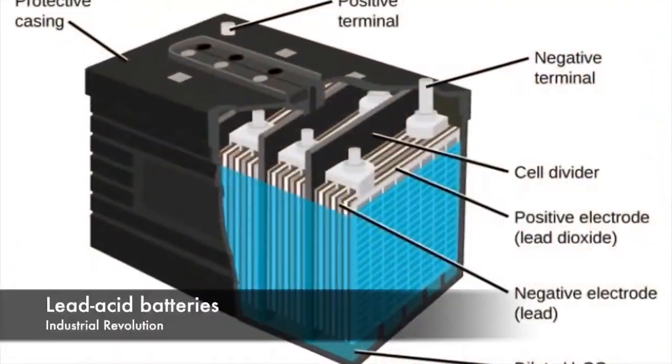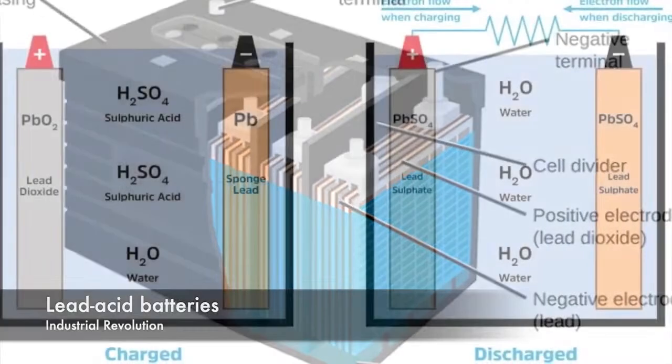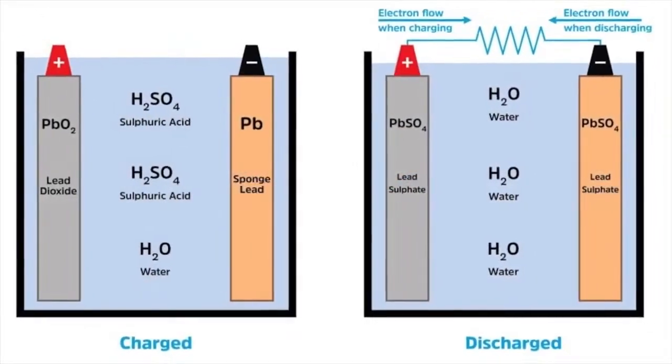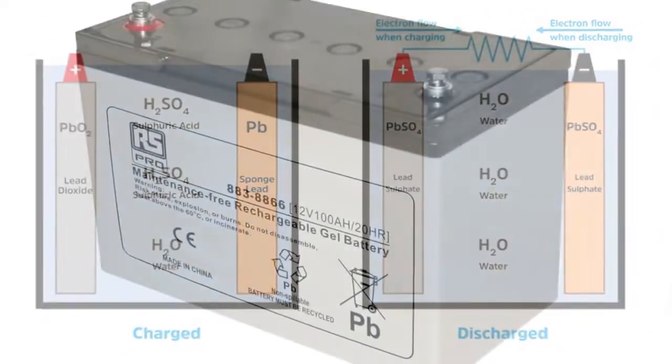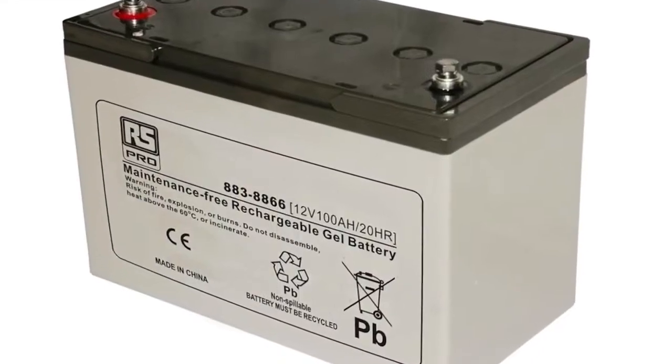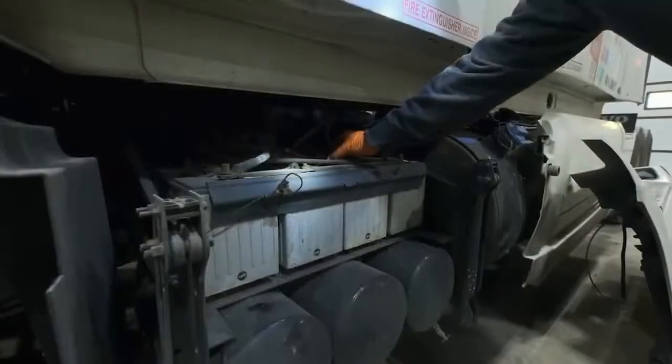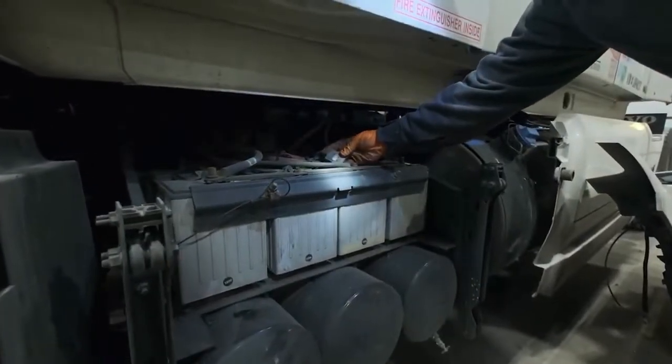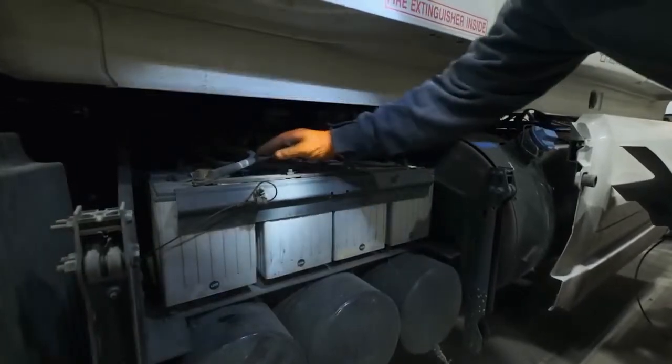The industrial revolution brought significant advancements in battery manufacturing. Lead-acid batteries, with their ability to store and release electricity through a reversible chemical reaction, became the standard for early electrical systems. These batteries were crucial for powering telecommunication networks, early automobiles, and even submarines.